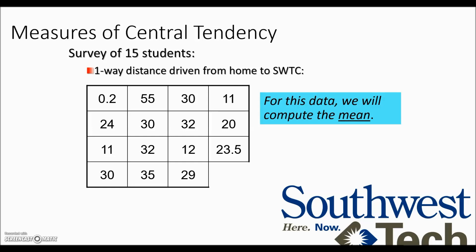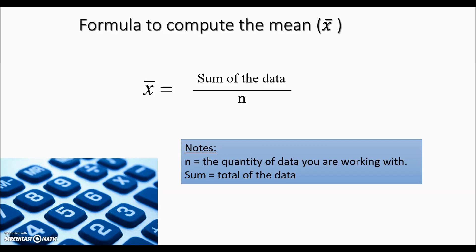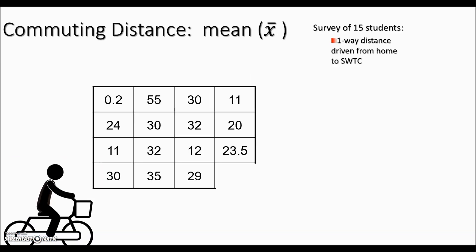So with the first example, we'll determine the mean for this. And to compute the mean, which is represented with x bar, we will take the sum of the data divided by n. Here, n is the quantity of data that we're working with and of course sum is the total for the data. So back to our commuting distance survey, we will add up all of the 15 commute distances and divide it by the number of numbers to give us the mean or x bar.